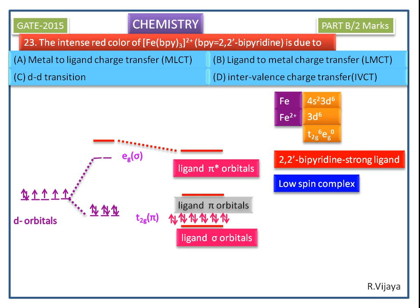The 6 ligands' sigma orbitals can form 6 sigma bonds with the central metal ion. The energy difference between the sigma bonding molecular orbital and the T2G orbital is high. Moreover, the T2G orbital has no space to accommodate additional electrons, so there is a chance to transfer electrons from the T2G metal orbital to the pi star ligand orbital.